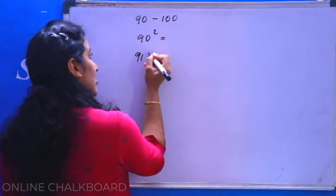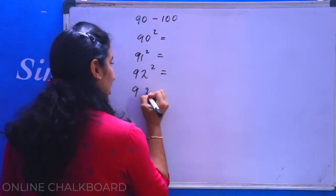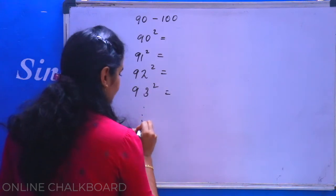91 square, 92 square, 93 square. We just select 100 square.